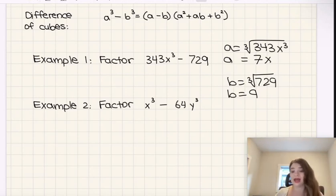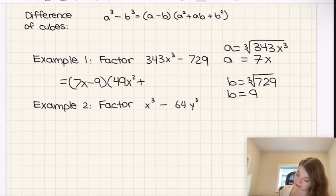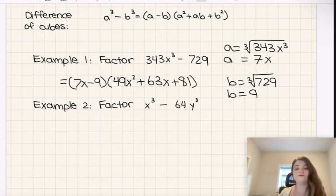So now that we know that a is 7x and b is 9, we just need to sub those values in for a and b, given the original equation. So we're going to have 7x minus 9 times, a squared, so 7x squared, which is going to be 49x squared, plus ab, so plus 9 times 7x, which is 63x, plus b squared, so that's 9 squared, or 81. And there we go. Awesome.